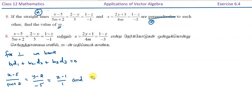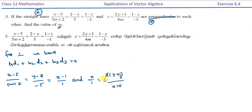The second line rearranged: x divided by 1 equals (y plus 1 by 2) divided by 4m — cancelling the term gives 2m — equals (z minus 1) divided by 3. So the second line is expressed in standard symmetric form with denominators 1, 2m, and 3.